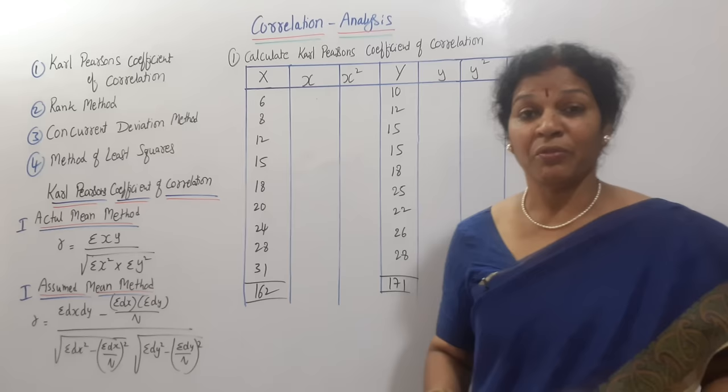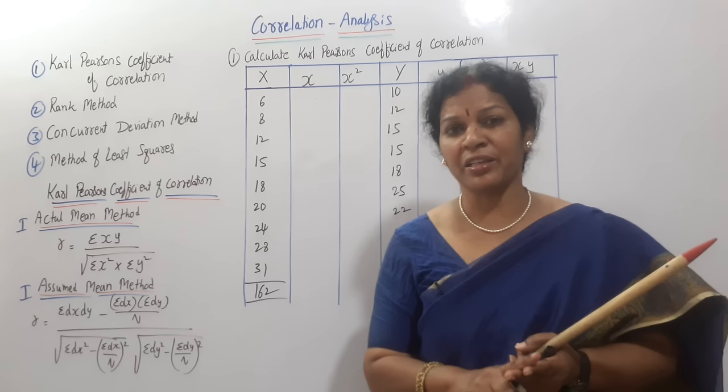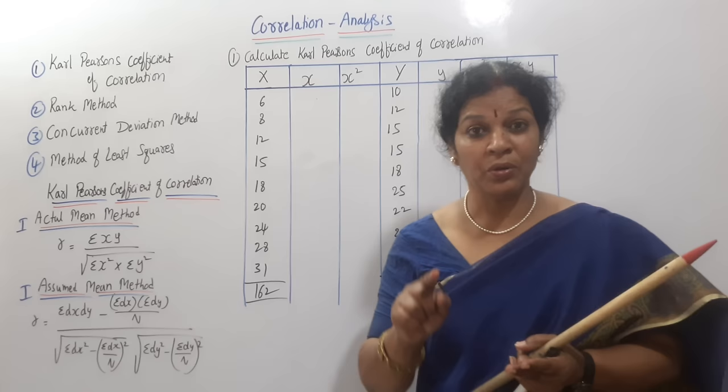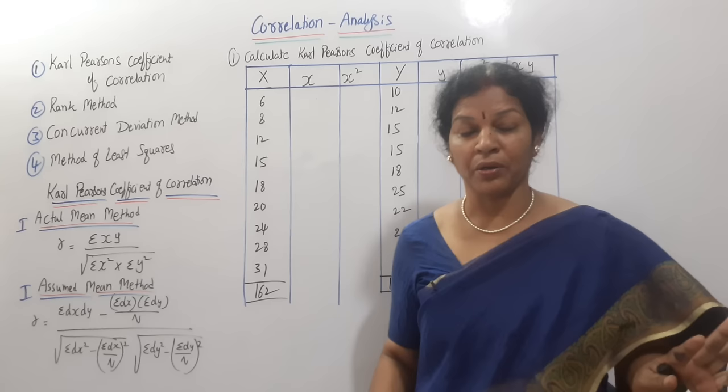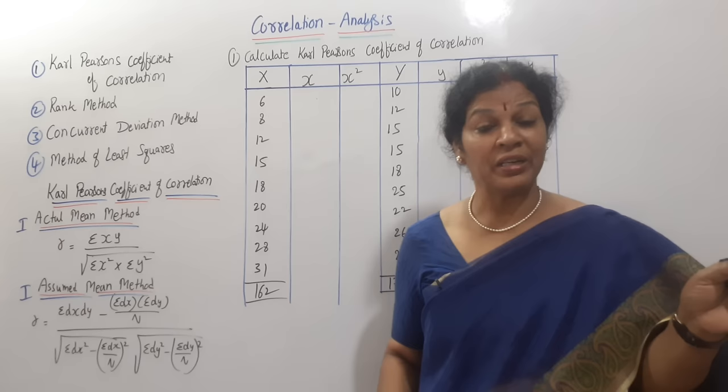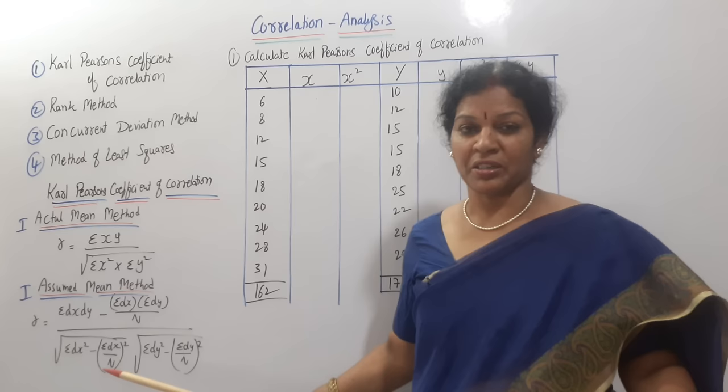One important thing to remember: in the exam, when they ask you to calculate Carl Pearson's correlation, they never ask you to follow either actual mean or assume mean specifically. You can follow any method, unless it is mentioned very clearly — 'calculate using assume mean' or 'calculate using actual mean.' Otherwise, you can go with any method.